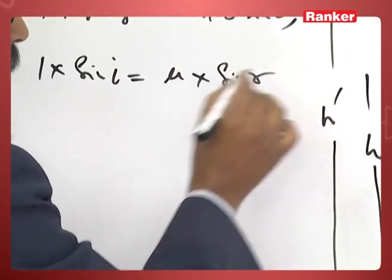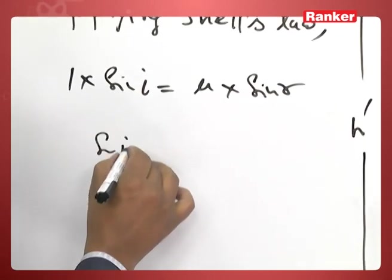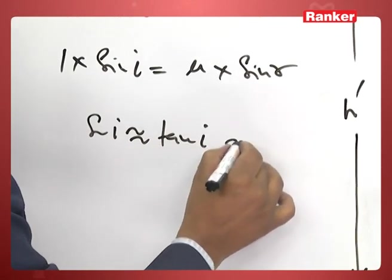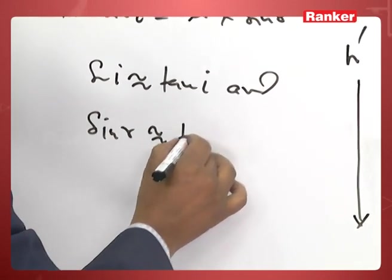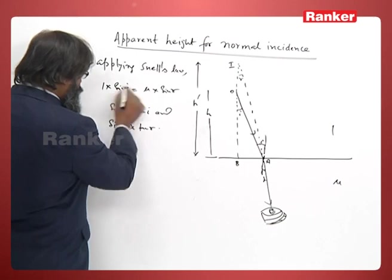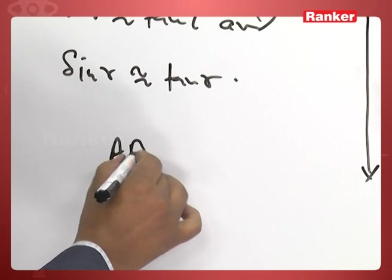For paraxial approximations, sin i can be approximated as tan i and sin r can be approximated as tan r. So we have sin i is AB/OB.